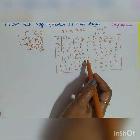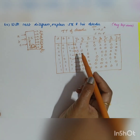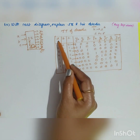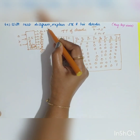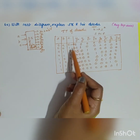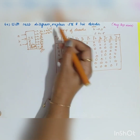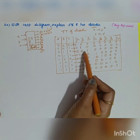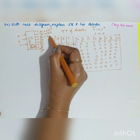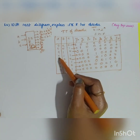To construct this using gates, the Boolean expressions are: Y0 = A'B'C', Y1 = A'B'C, Y2 = A'BC', and Y3 = A'BC. These correspond to the minterms for each output line.